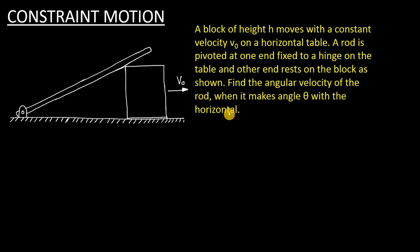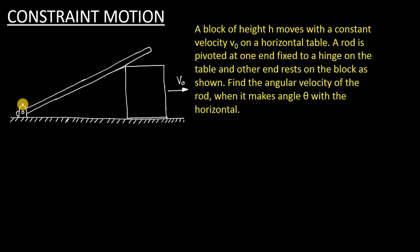Hello students! This is another question of constant motion where there is a block which is moving with velocity v0 and a rod which is hinged at one end of the table and the other part is lying on the block. As the block moves, the rod will rotate.